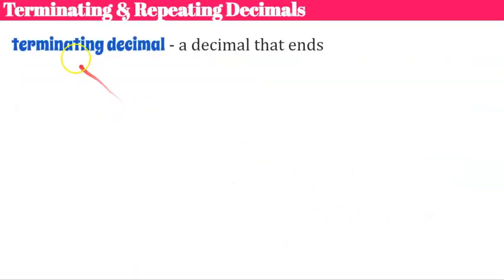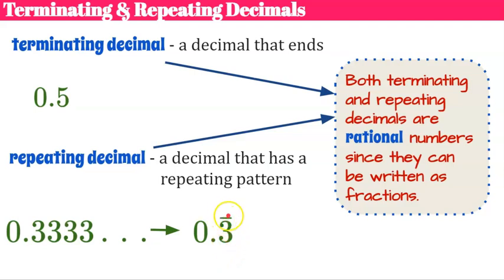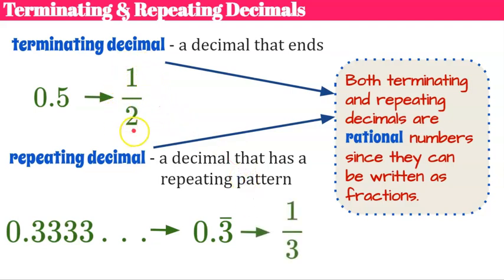A terminating decimal is a decimal that ends — 0.5 is an example. A repeating decimal is a decimal that has a repeating pattern, such as 0.333... or 0.3 with a repeating bar above it. Both terminating and repeating decimals are rational numbers since they can be written as fractions. For example, 0.5 is equivalent to one-half, and 0.3 repeating is equivalent to one-third.